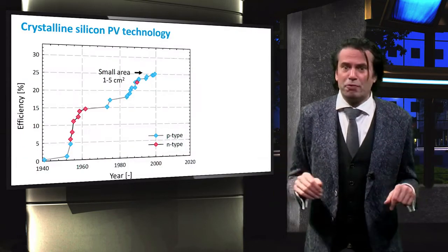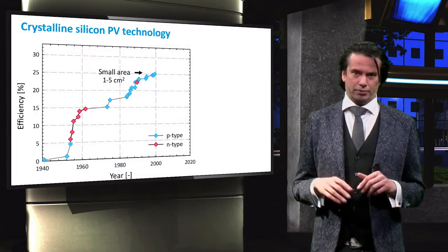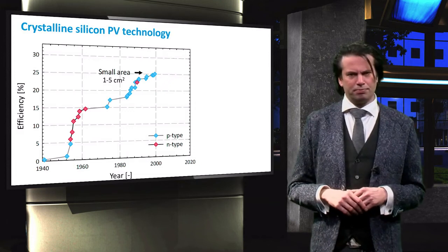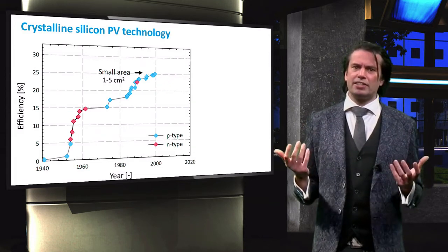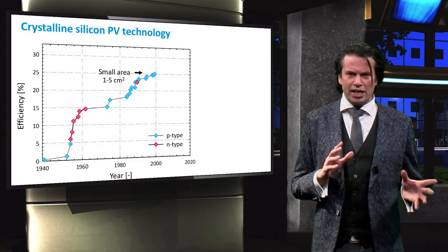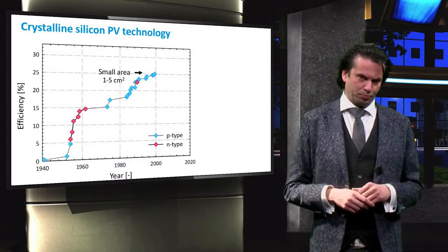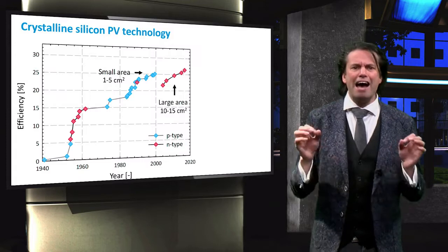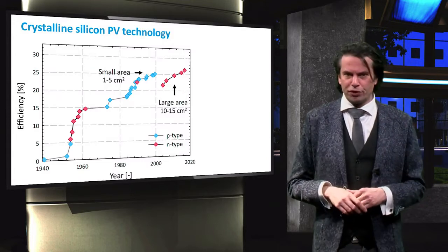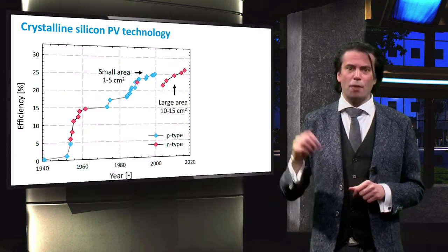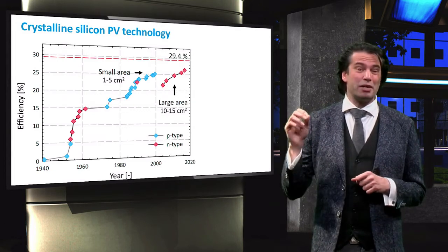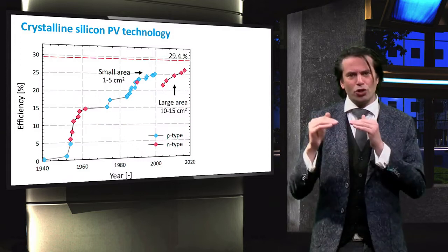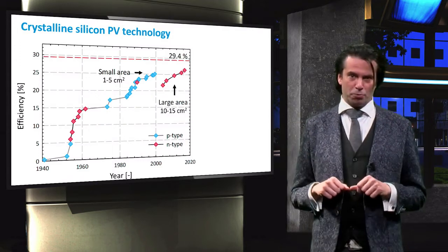For the last 70 years, the performance of crystalline silicon solar cells has steadily increased. The efficiency of solar cells with an area smaller than 5 cm² is plotted here over a period of 80 years. The red data points represent crystalline silicon solar cells with an n-type absorber, while the blue data points are cells with a p-type absorber layer. Over the last 15 years, the performance of solar cells with a larger area up to 15 cm² has strongly increased, up to the theoretical limit for crystalline silicon solar cells of 29.4%. The closer we get to this limit, the harder it will be to further improve the performance of the cells.